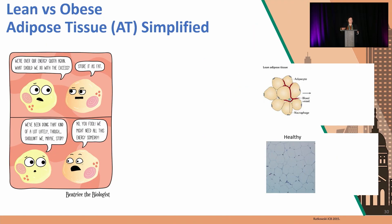I like to start my talks with this adipose tissue simplified slide. I like this little cartoon about how adipocytes think about their roles — they think about storing fat. And at some point they need to maybe stop storing fat, but we've evolved to continue doing that.